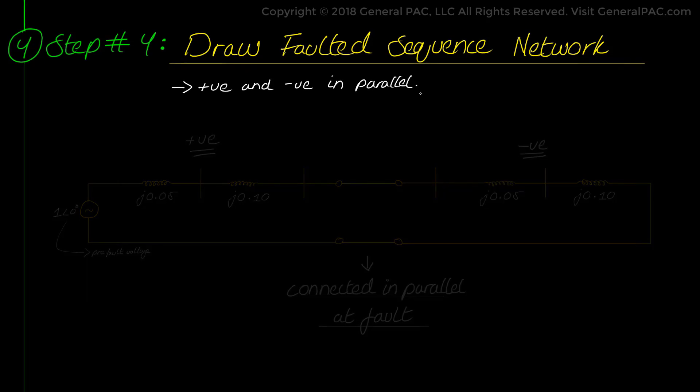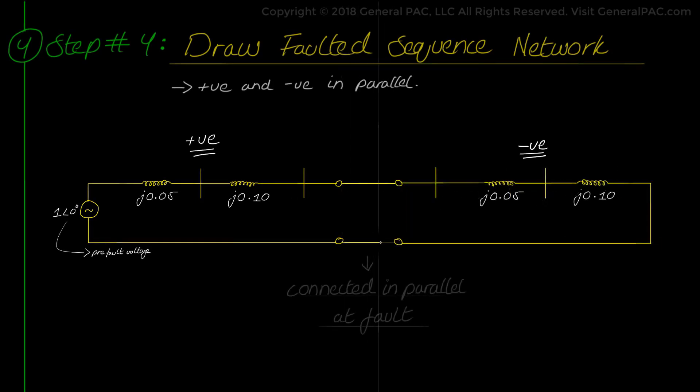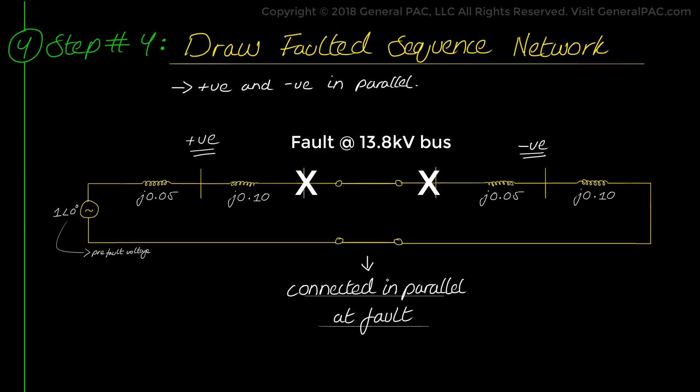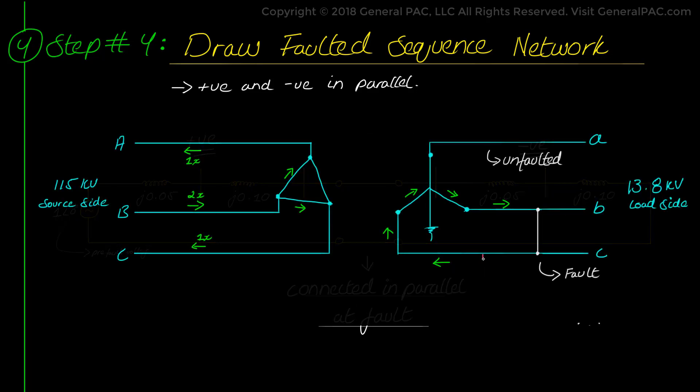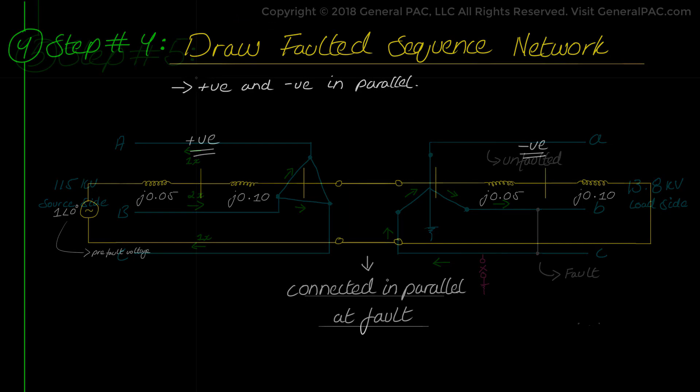To give a brief description of the faulted network, we basically have a positive sequence and negative sequence networks connected in parallel at the point of the fault. Line-to-line faults that are although unsymmetrical are not connected to ground which means that zero sequence current will not be able to flow from ground into the fault. And this explains why zero sequence networks are omitted from the construction of the faulted sequence network.